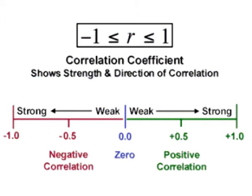To measure correlation, we find the correlation coefficient, r, which has a range between negative 1 to 1. The closer the correlation coefficient is to 1 or negative 1, the stronger the correlation between the two assets.